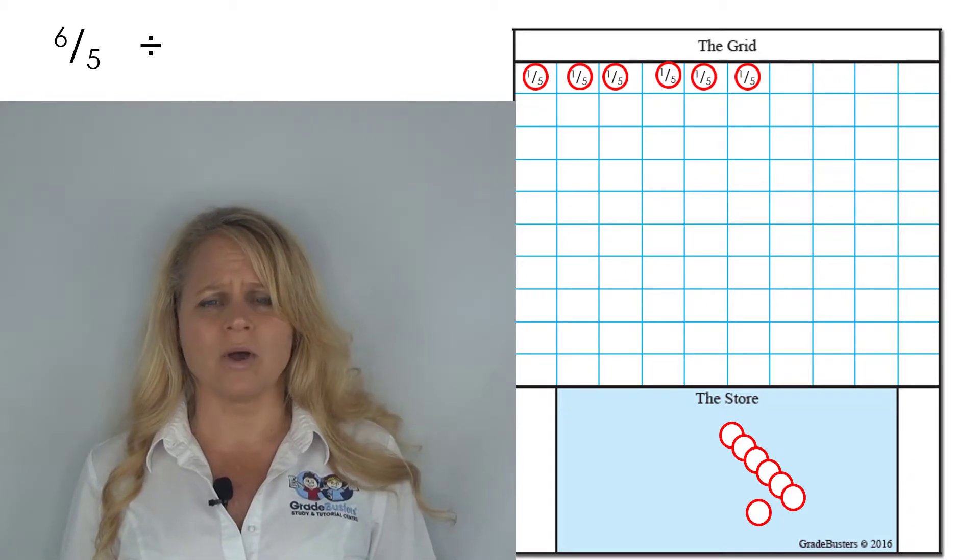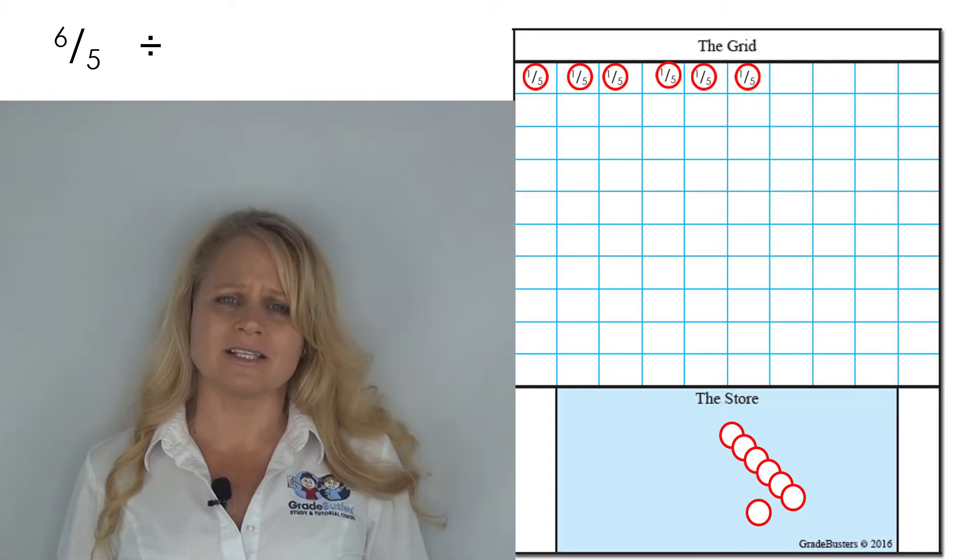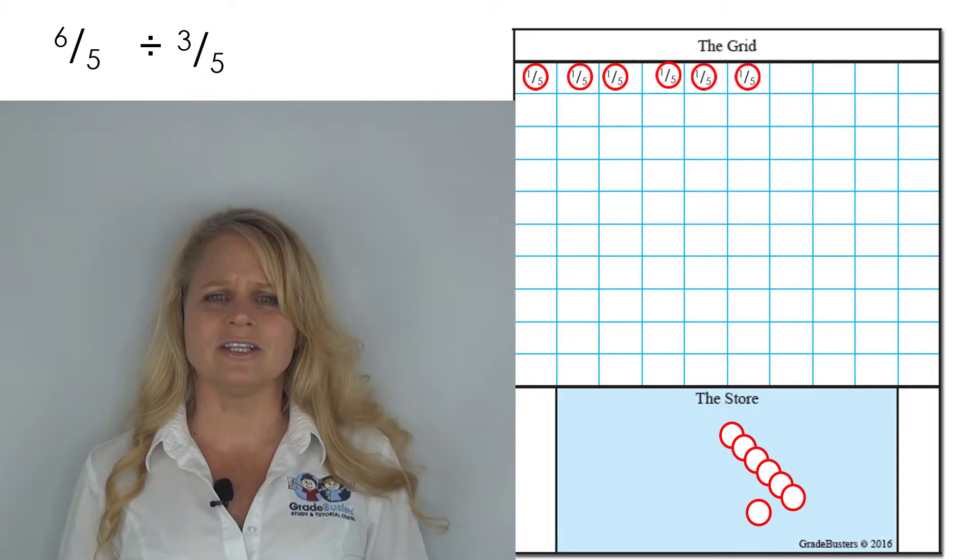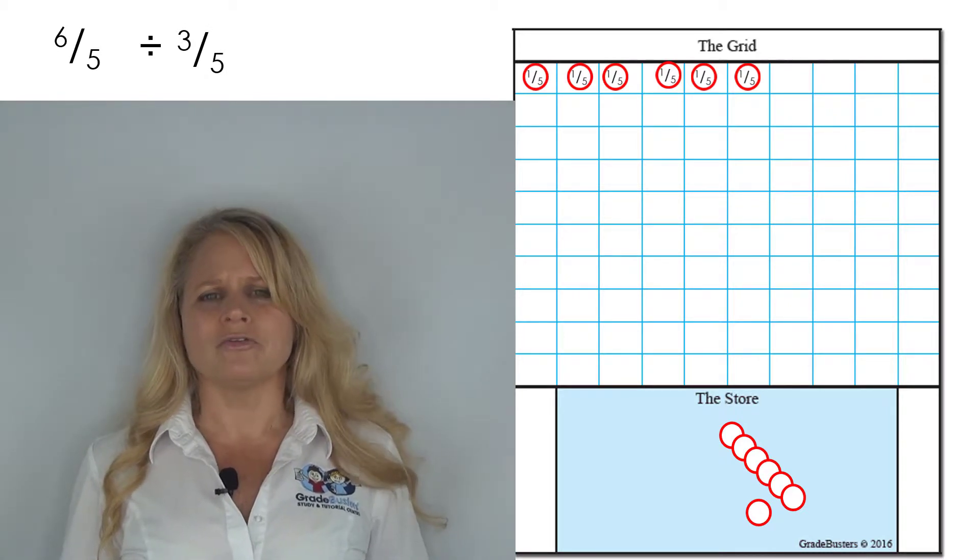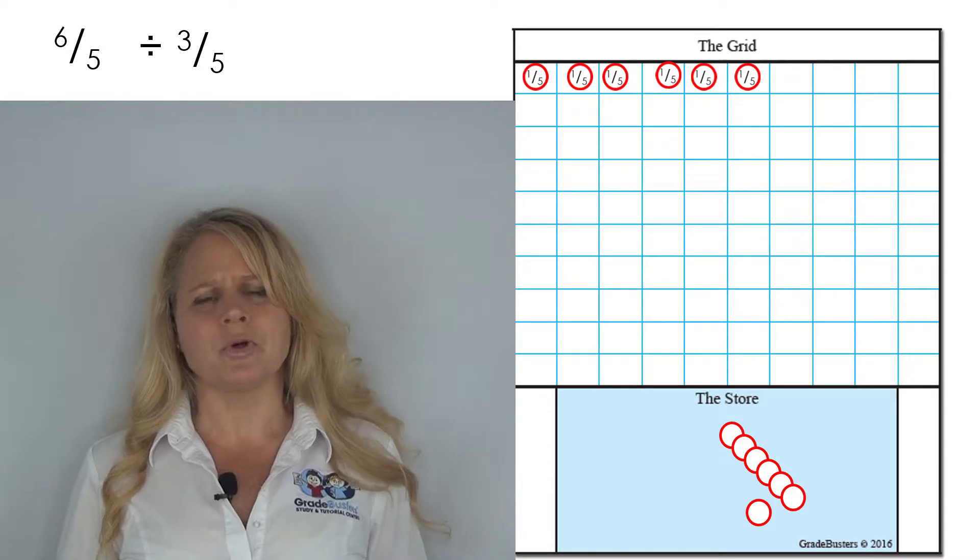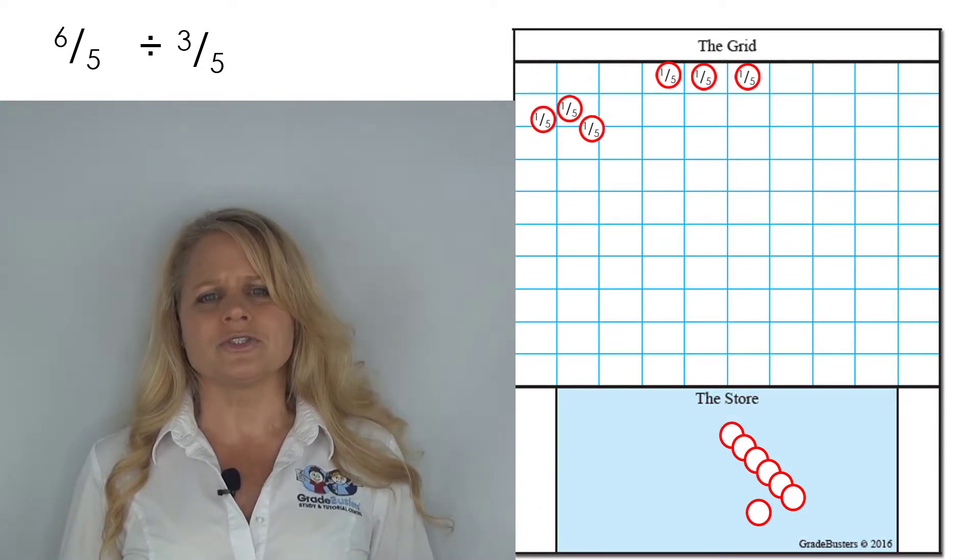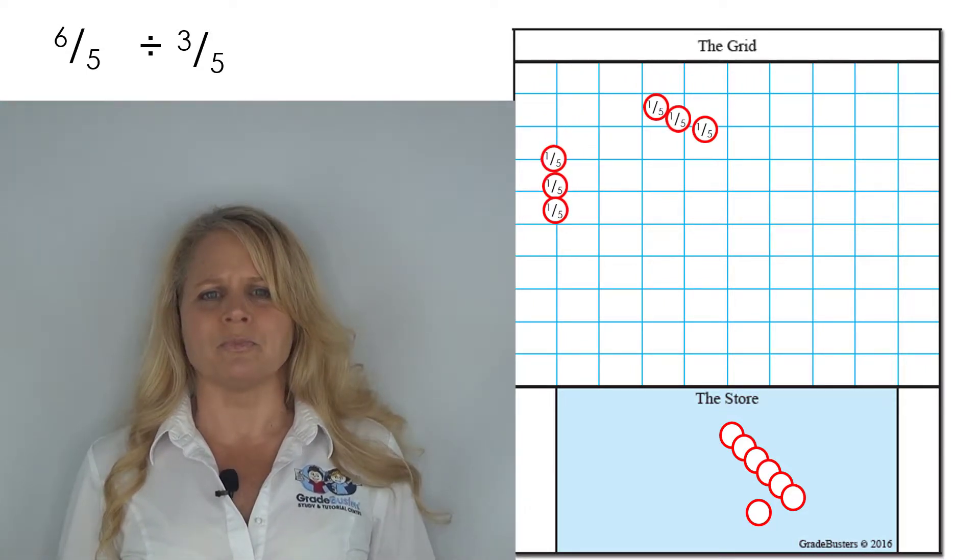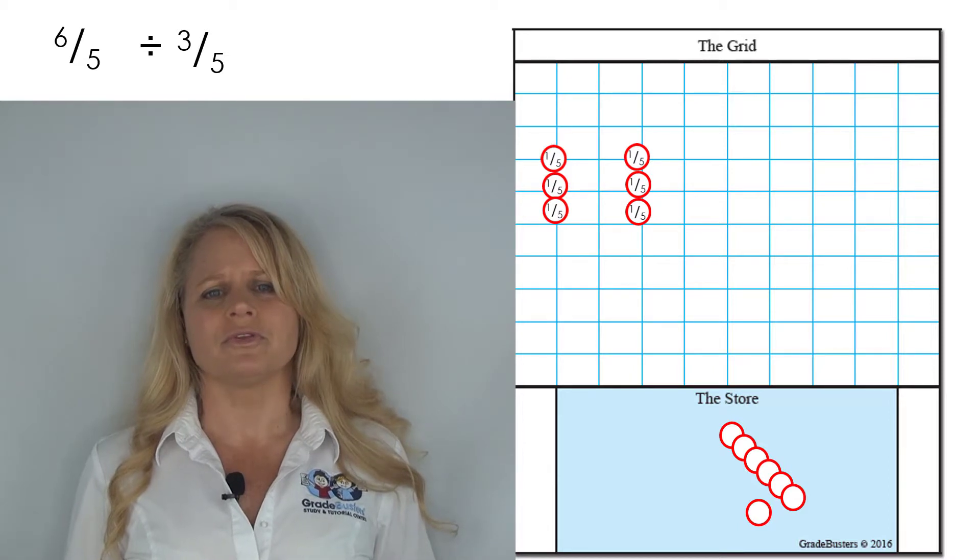Let's put them into groups. One, two, three—there's a group of three fifths. One, two, three—there's a group of three fifths.